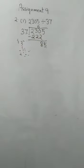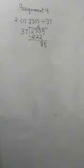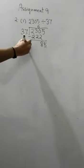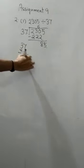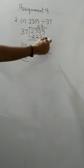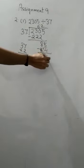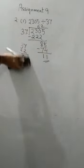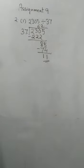37 into 2, you can try, right? 37 into 2 is 74. So you write it, 74, minus, what will you get? 1 and 1, 11. So with that, the division stops. So 11 is the remainder and 62 is the quotient. That is how you solve the first question.